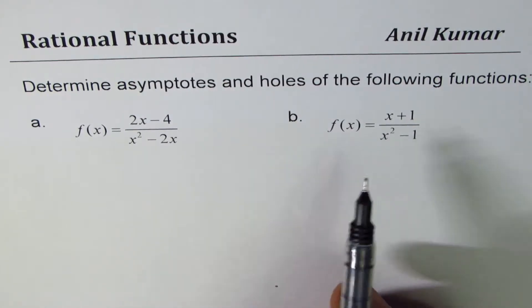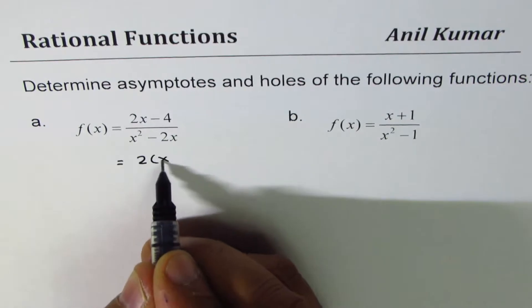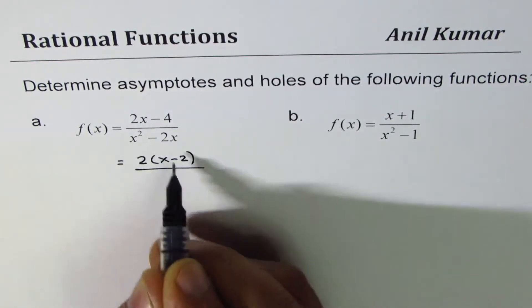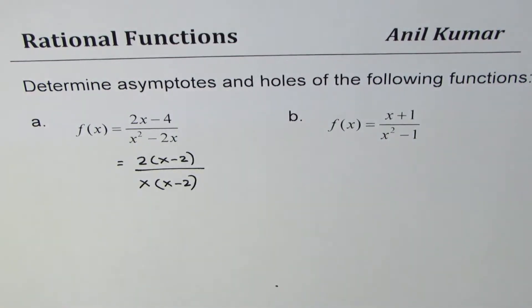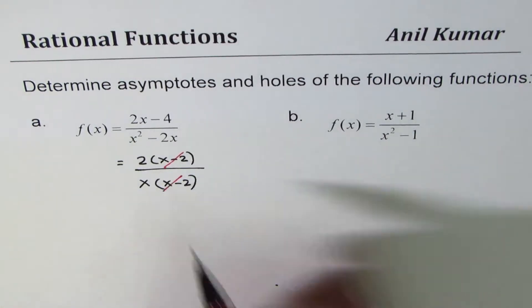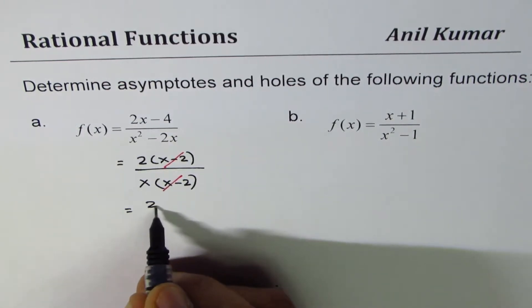First step is always to factor. So let's factor. We can get 2 common from x minus 2 in the numerator. Here x is common, x minus 2 in the denominator. x minus 2 cancels. That leads to a hole, and we get 2 over x.